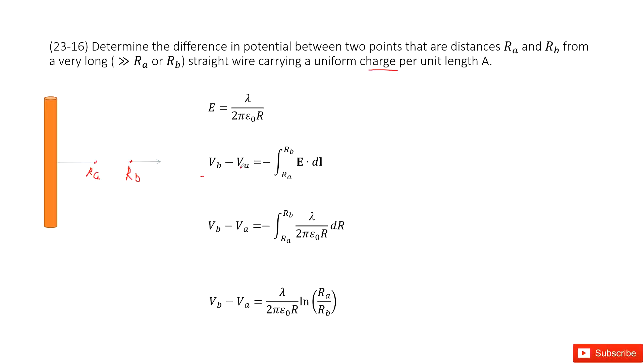You see, the potential difference Vb minus Va is negative the integral from Ra to Rb, right? Yes. We can see this is E dot DL.